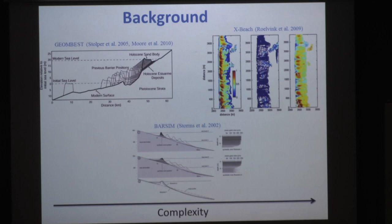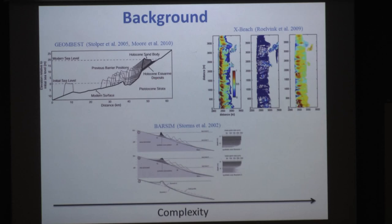The way you choose the model is based on the question you are trying to address. If you are interested in the response of barriers to a single storm event, you probably want to use XBeach, which has already been validated here on the East Coast many times. But if you are interested in the long-term response of barriers, then you might want to use a geometric approach such as Geo-Best.